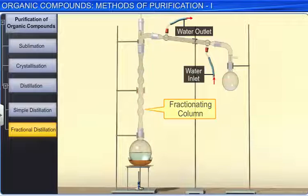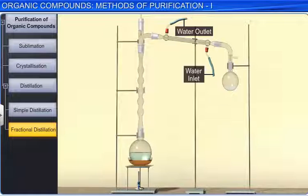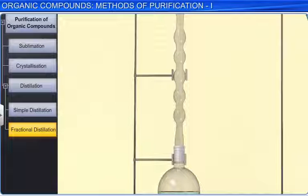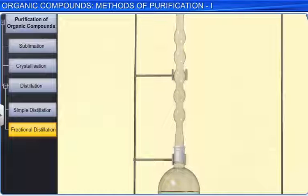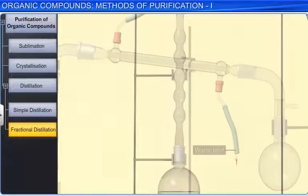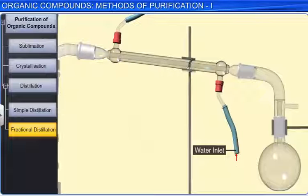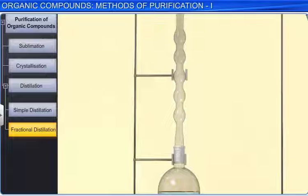The vapors of a liquid mixture are passed through this column before condensation. As the liquid boils, the more volatile component rises to the top. Some of the condensing liquid obtains heat from the ascending vapors and gets vaporized again, becoming richer in the low boiling component. These vapors of the low boiling component rise to the top of the column, becoming purer as they reach the top. The pure vapor is passed through the condenser and collected. The remaining liquid in the distillation flask becomes rich in the high boiling component after successive distillations. Each successive condensation and vaporization unit in the fractionating column is called a theoretical plate.